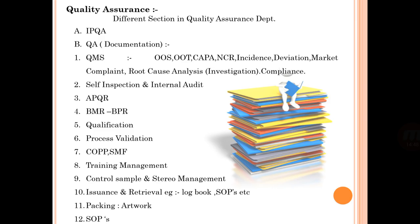Different sections in the quality assurance department include: IPQA, QA documentation, QMS, APQR, BMR, PMR, qualifications, process validations, training management, packing, and SOPs.